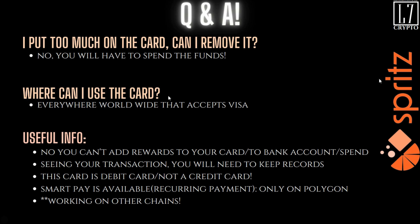Smart Pay is available, which lets you set up recurring payments — for example, pulling money from your Drip account each month to pay your mortgage. However, it's only available on Polygon right now; Binance Smart Chain is in the works. I asked about that specifically since that's the one I personally use. You can set it up now but only on Polygon.